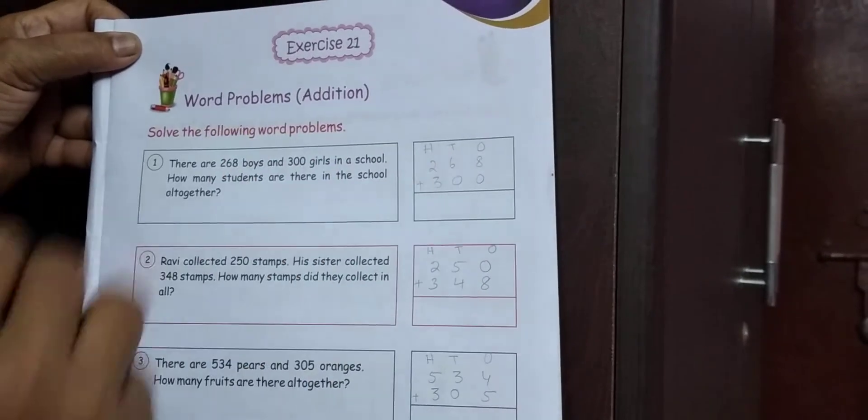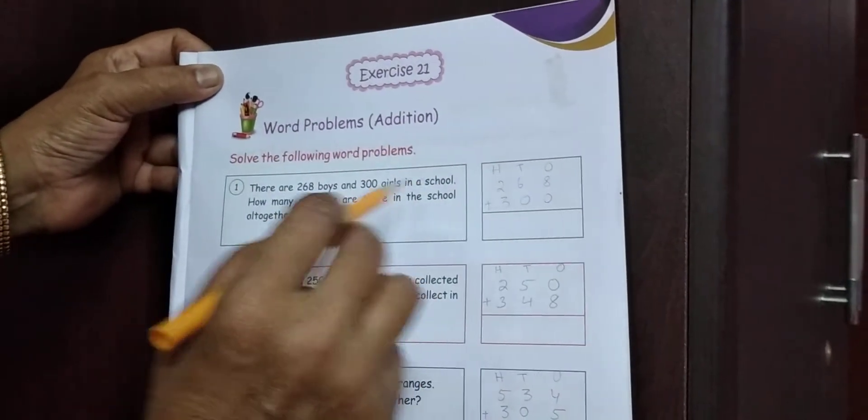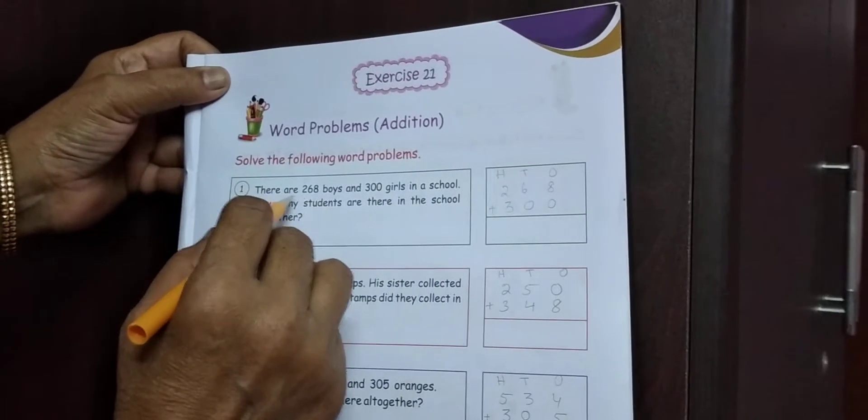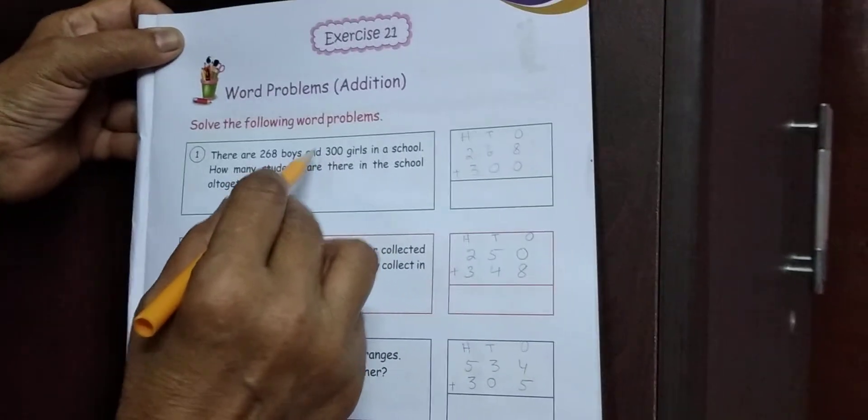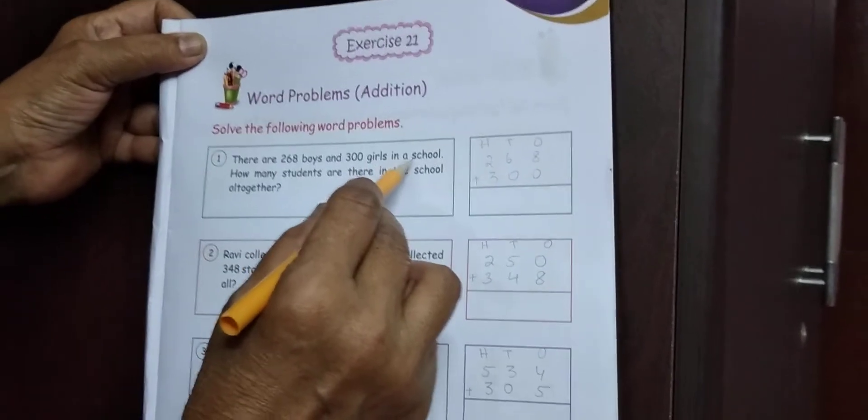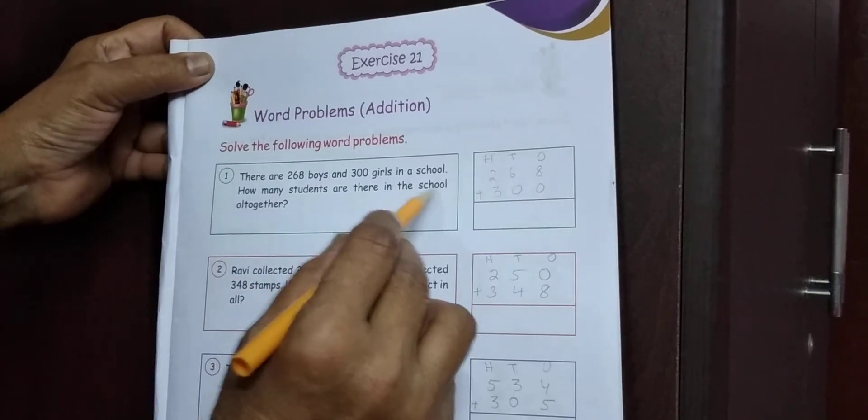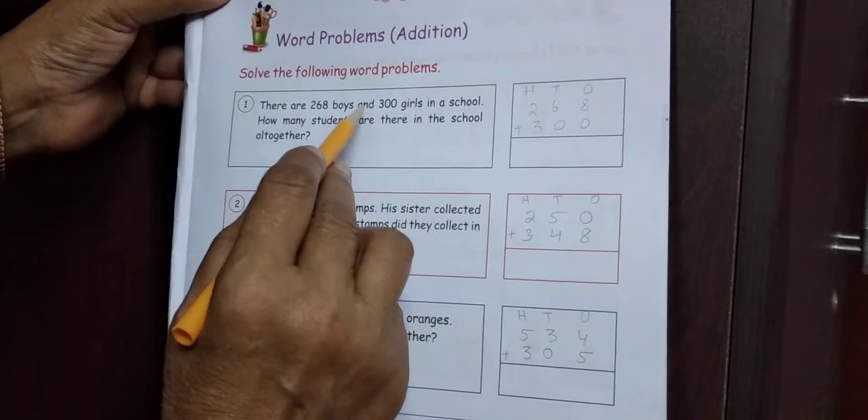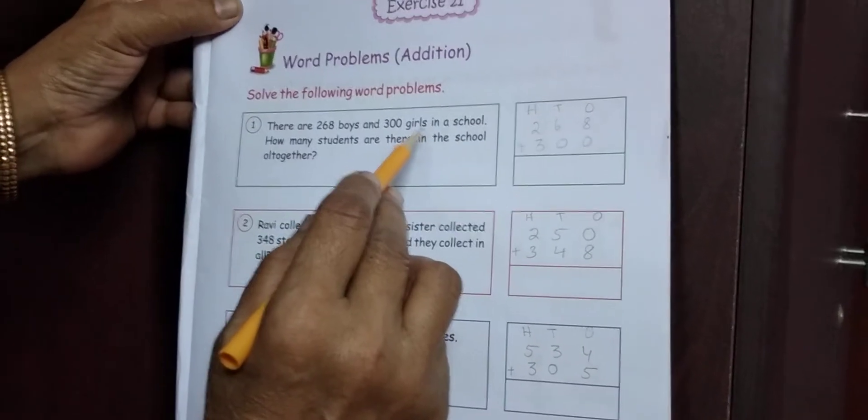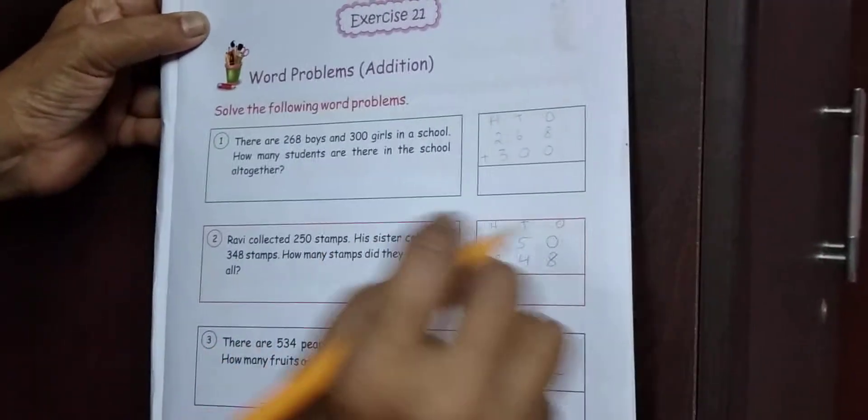Solve the following word problems. There are 268 boys and 300 girls in a school. How many students are there in the school altogether? 1 school में 268 boys and 300 girls है. 1 साथ में कितना student हो जाएगी? तुम addition करके दिखाओ.